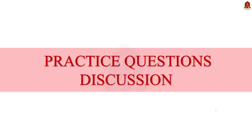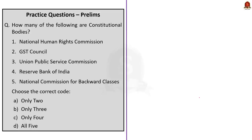Now let us take up the practice prelims questions. We have four practice prelims questions today. The first question asks how many of five given bodies are constitutional bodies: National Human Rights Commission, GST Council, UPSC, Reserve Bank of India, and National Commission for Backward Classes. The NHRC is a statutory body, not constitutional. The GST Council is a constitutional body. UPSC is a constitutional body. The RBI is a statutory body established under the RBI Act 1934. The National Commission for Backward Classes was recently made into a constitutional body. So bodies 2, 3 and 5 are constitutional bodies — the correct answer is option B: only three.